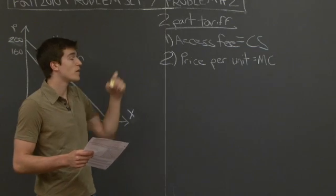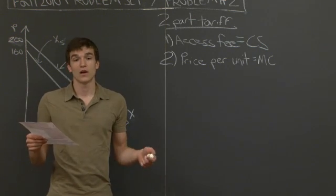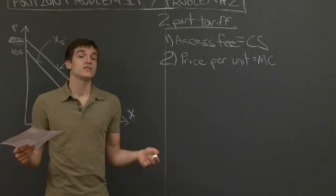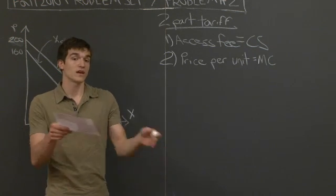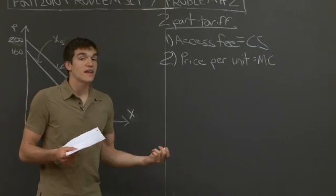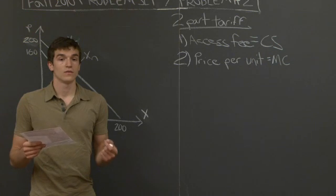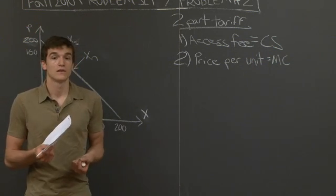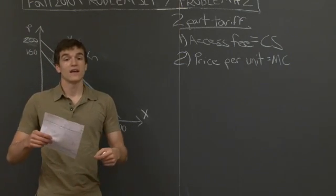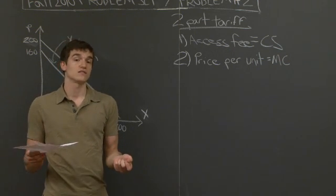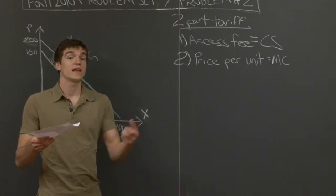The two parts of a two-part tariff: the first part is an access fee equal to the consumer surplus. You say to a consumer, you can have this set bundle of songs, but you're going to have to pay all of the potential benefit it would bring you. If it's going to bring you 160 units of benefit, we're going to take that and give it to the producers instead. The second part is the price per unit, and the producer decides this by setting the price per unit equal to the marginal cost.